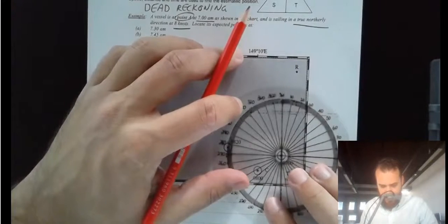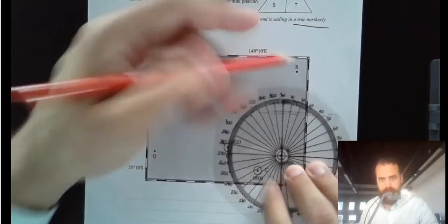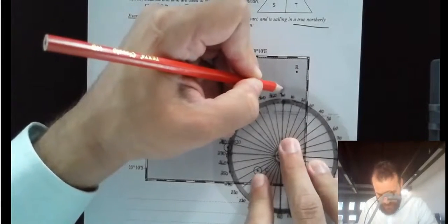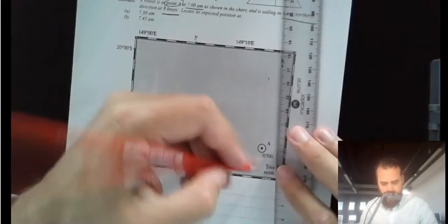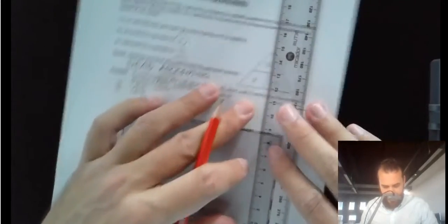So basically you just need to draw this in. He's heading true north. I'm going to try to be fairly accurate with this. So he starts at point A at 7am, and he starts heading true north.